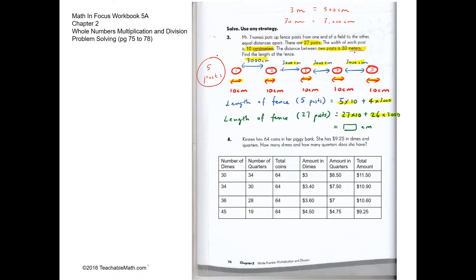Question 4. Kristin has 64 coins in her piggy bank — $9.25 in dimes and quarters. How many dimes and how many quarters does she have? We're going to use trial and error. First we start with 30 dimes and 34 quarters, because they add up to 64. 30 dimes make $3 and 34 quarters make $8.50, so together that's $11.50, which is too much. So we decrease the number of quarters and increase the number of dimes.